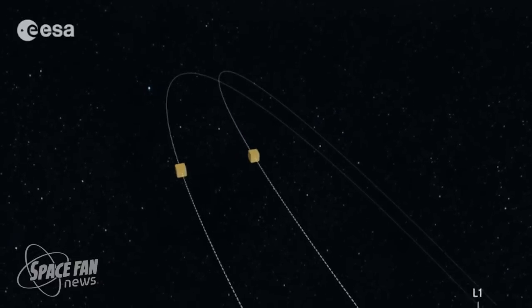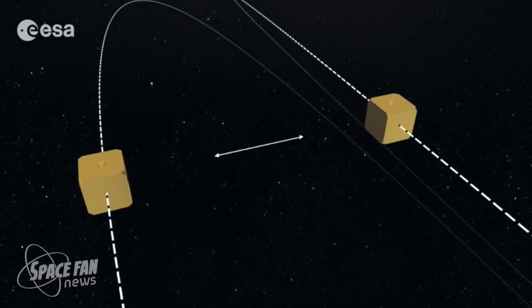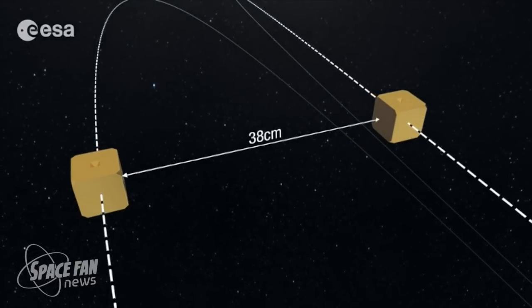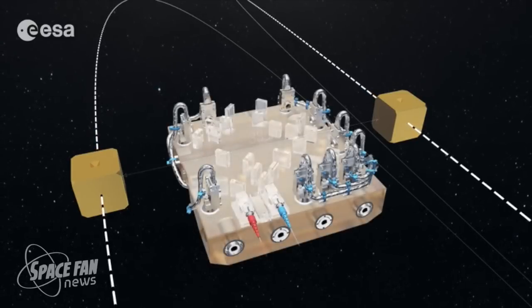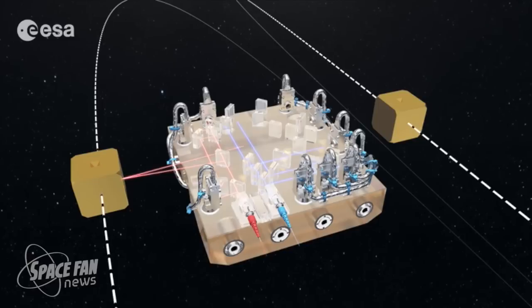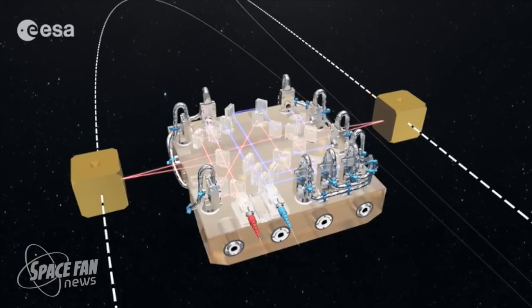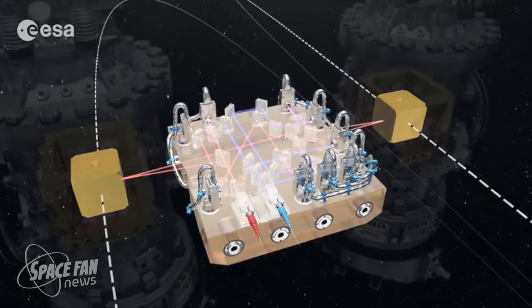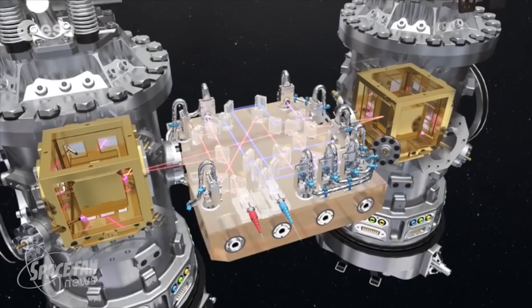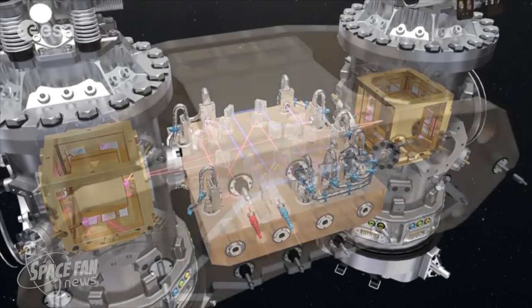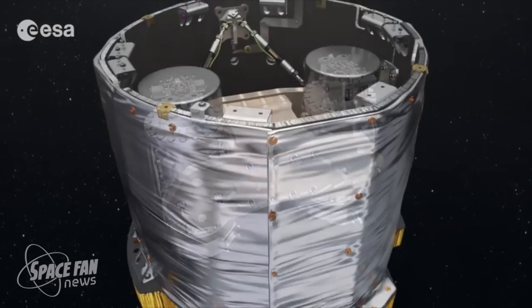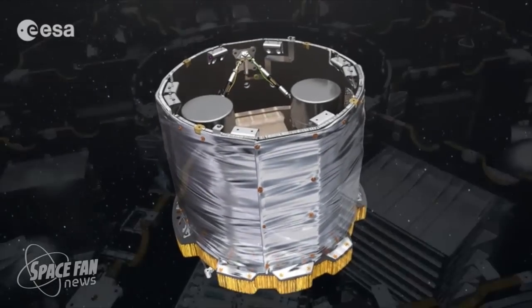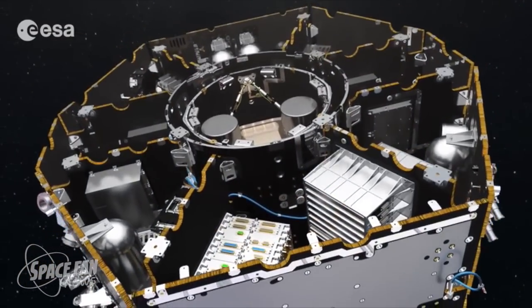It is a probe designed to test the technology behind a future full-scale gravity wave detector. At its core is a pair of identical 46mm gold-platinum cubes separated by 38cm, which will be isolated from all external and internal forces acting on them except for one, gravity. The mission will put these cubes in the purest free-fall ever produced in space, and monitor their relative positions to an astonishing precision, laying the foundations for gravitational-wave observatories in space.